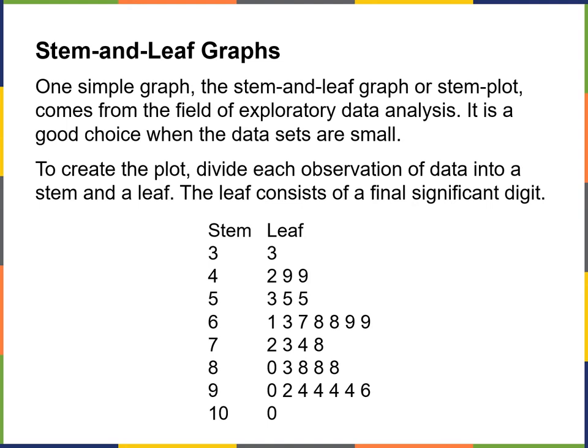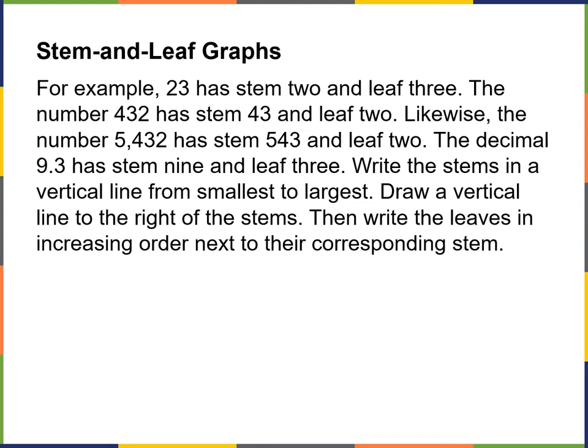You can see that most people scored somewhere in the 60s and somewhere in the 90s. There was one person who had a very low score of 33, and one person who had a very high score of 100. Going further, 23 has stem 2 and leaf 3. The number 432 has stem 43 and leaf 2. Likewise, the number 5,400,432 has stem 543 and leaf 2.